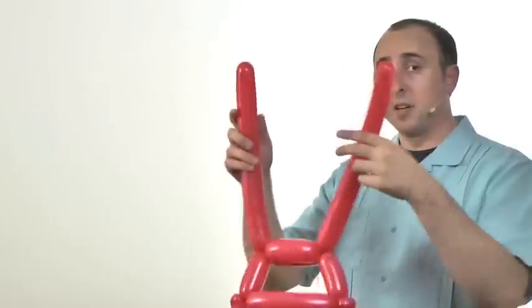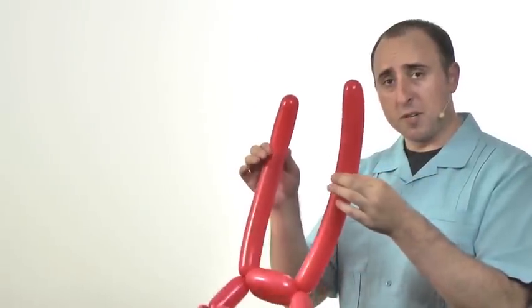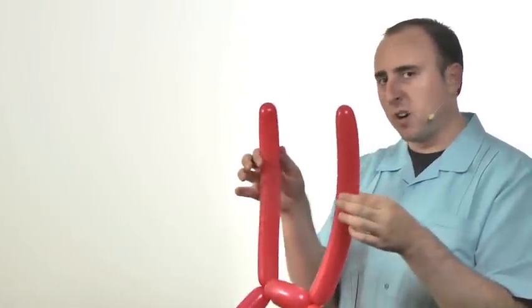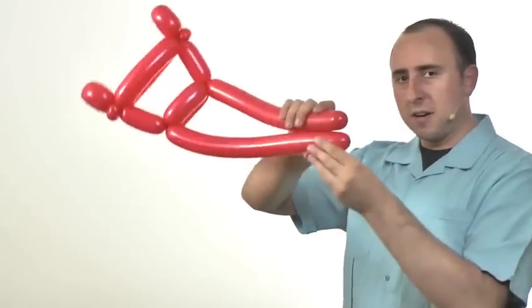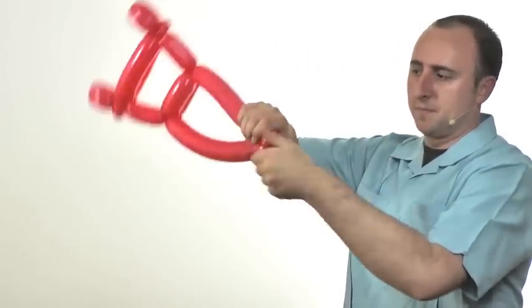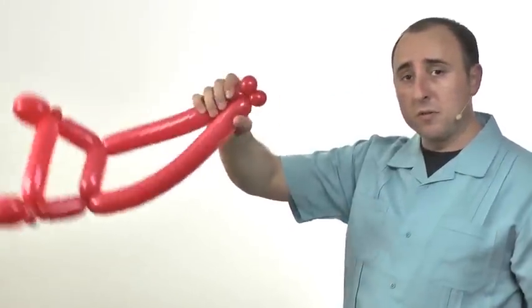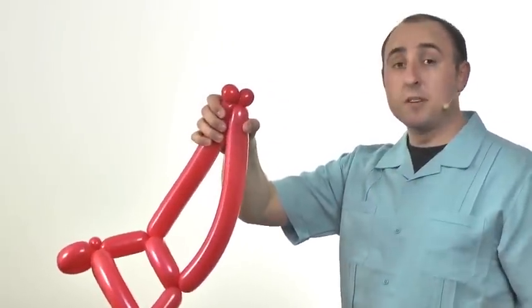The next step is real easy. You take the two ends because they should be pretty much full now. It shouldn't be all that soft at all. At the very end here you're going to want to twist two small bubbles together. You can do it with one fluid motion or you can do them individually.